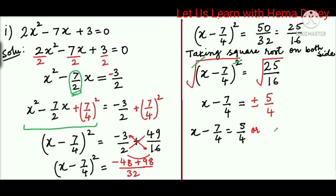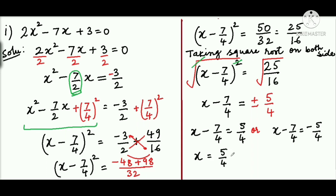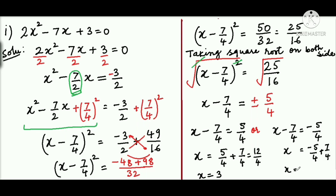We solve this to get the values of x. To get the first root, we take +5/4, and for the second root, we take -5/4. The first root is x = 5/4 + 7/4 = 12/4 = 3. The second root is x = -5/4 + 7/4 = 2/4 = 1/2. So the two roots of the equation are x = 3 and x = 1/2.